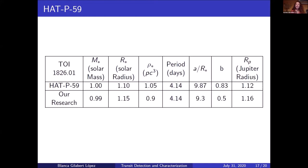So we wanted to compare the values of the discovery paper of the HATS-P-59 with the ones that we obtained. And here, as you can see, the radius of the planets are pretty similar. So it was real motivation for us having this discovery of this recent paper.